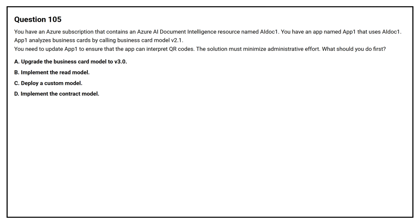Option A: Upgrade the business card model to V3.0. Option B: Implement the read model. Option C: Deploy a custom model. Option D: Implement the contract model. The correct answer is Option A: Upgrade the business card model to V3.0.